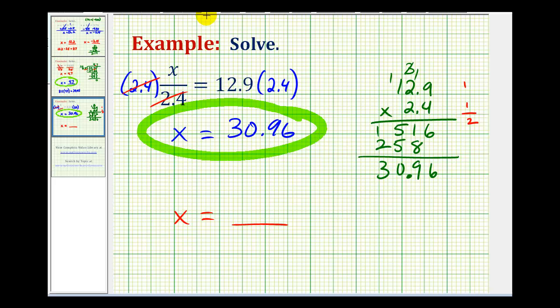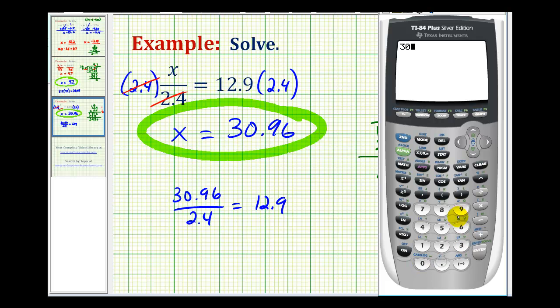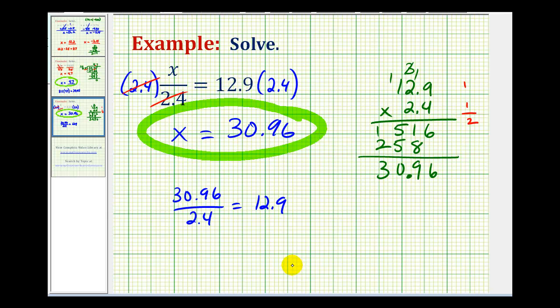Now let's go ahead and check this. If we substitute 30.96 for X, we'd have 30.96 divided by 2.4 must equal 12.9. So 30.96 divided by 2.4 does verify our solution is correct. Okay, I hope you found this helpful.